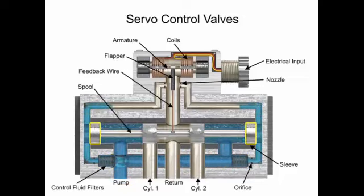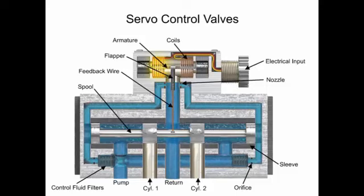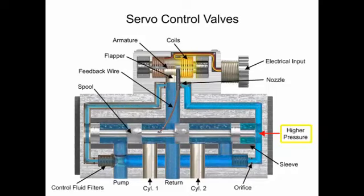Fluid from the pump inlet is tapped off through filter elements, passes through orifices past both ends of the spool, goes on to nozzles, and out to the return line. A feedback wire attached to the flapper terminates in a ball end that sits in a very close fit slot in the spool. When the torque motor coils receive a current signal, the armature rotates clockwise or counterclockwise, pushing the flapper closer to one nozzle and farther away from the opposite one. This allows pressure to increase at one end of the spool and decrease at the other.